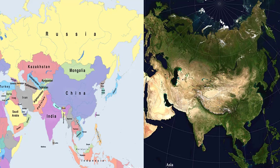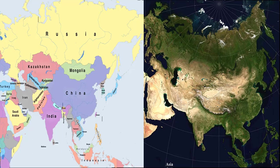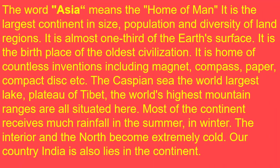Here you are watching Asia continent. Our India is also located in this same continent. The word Asia means the home of man. It is the largest continent in size and population. It covers almost one third of the earth's surface. It is the birthplace of the oldest civilization and the home of countless inventions including the magnet, compass, paper, and compact disc.